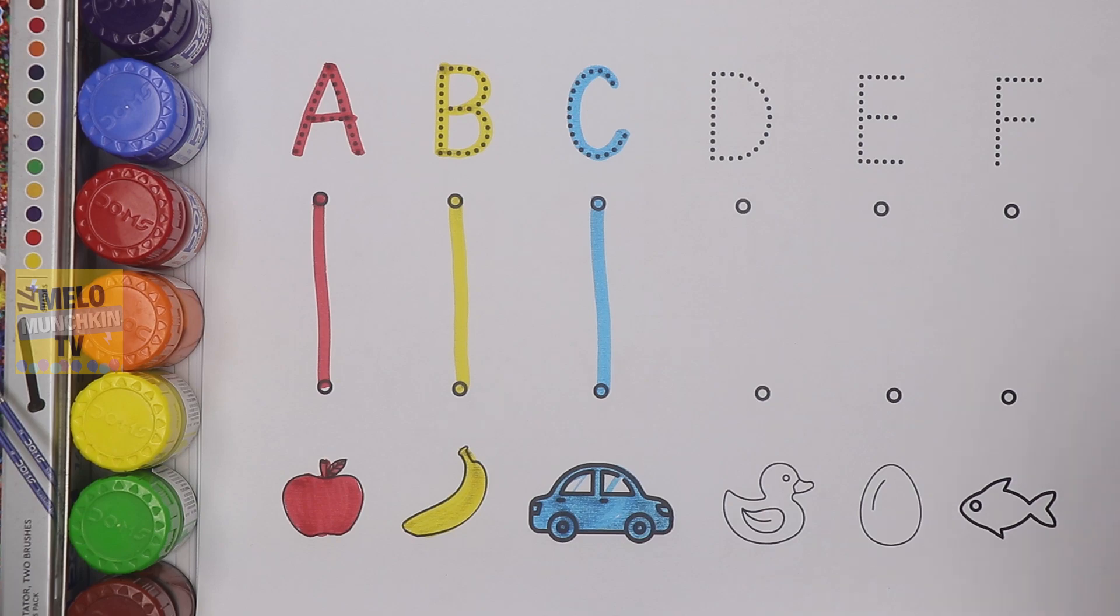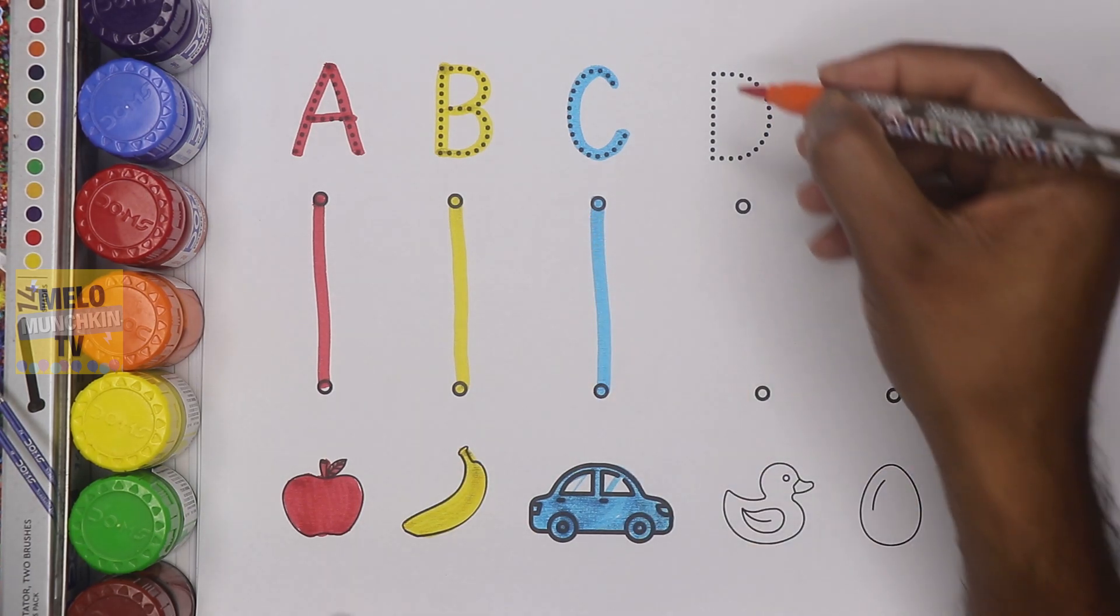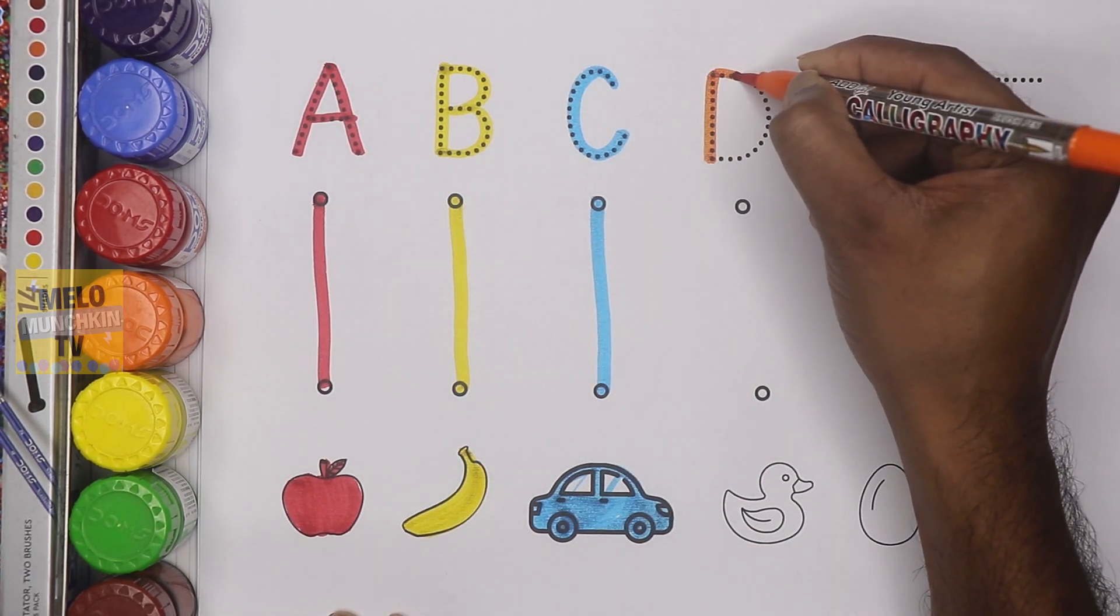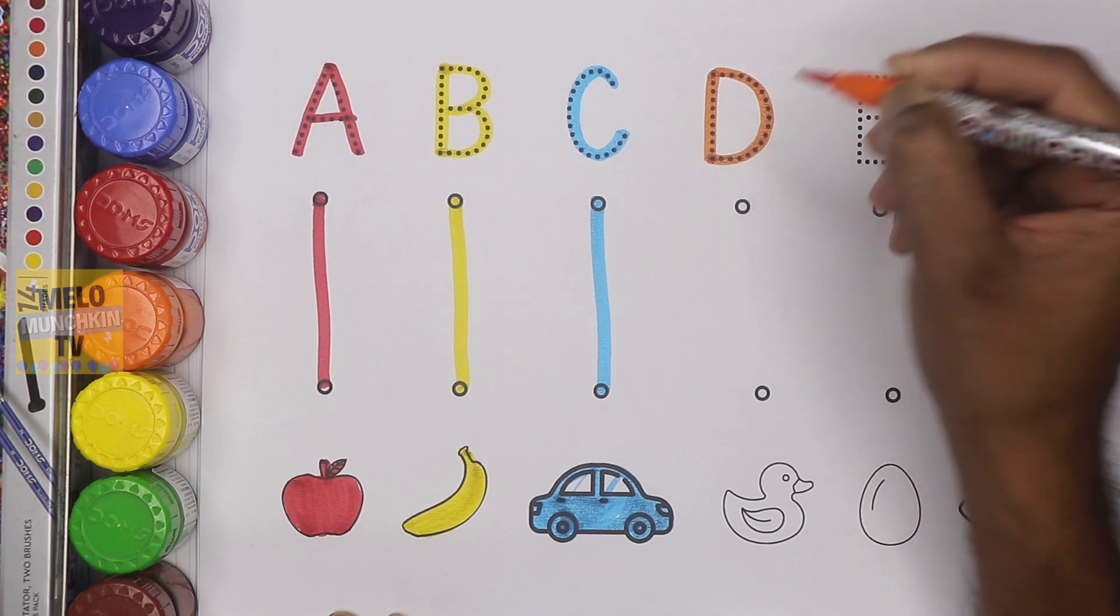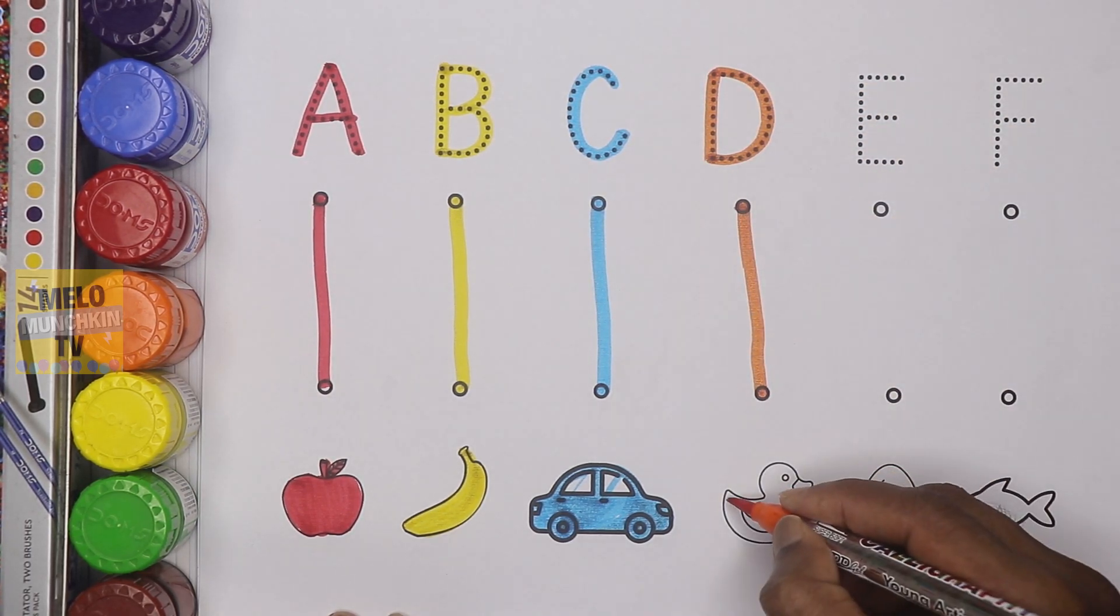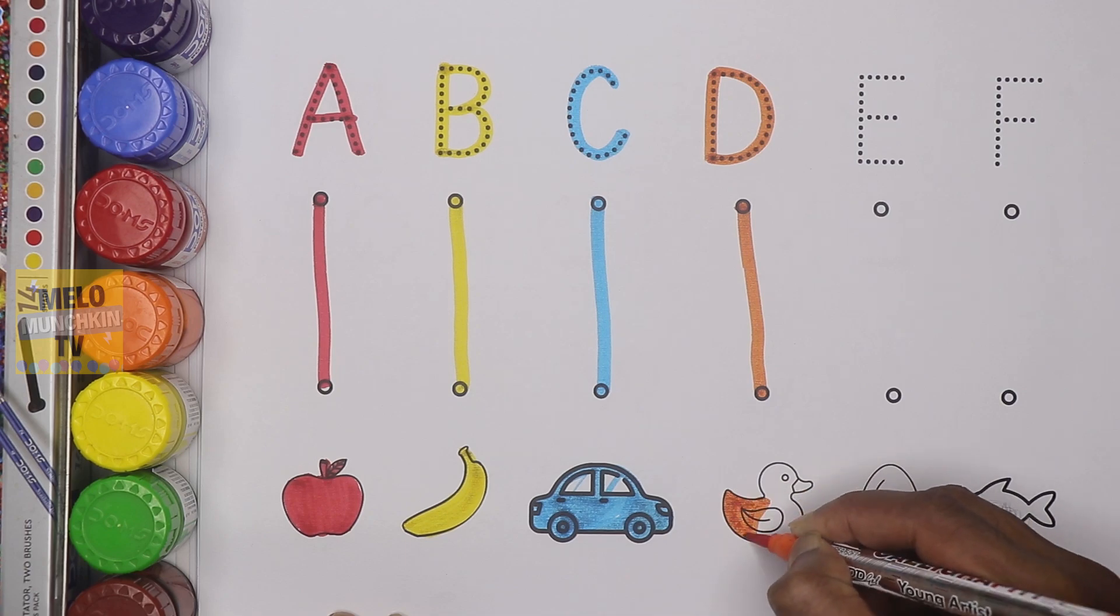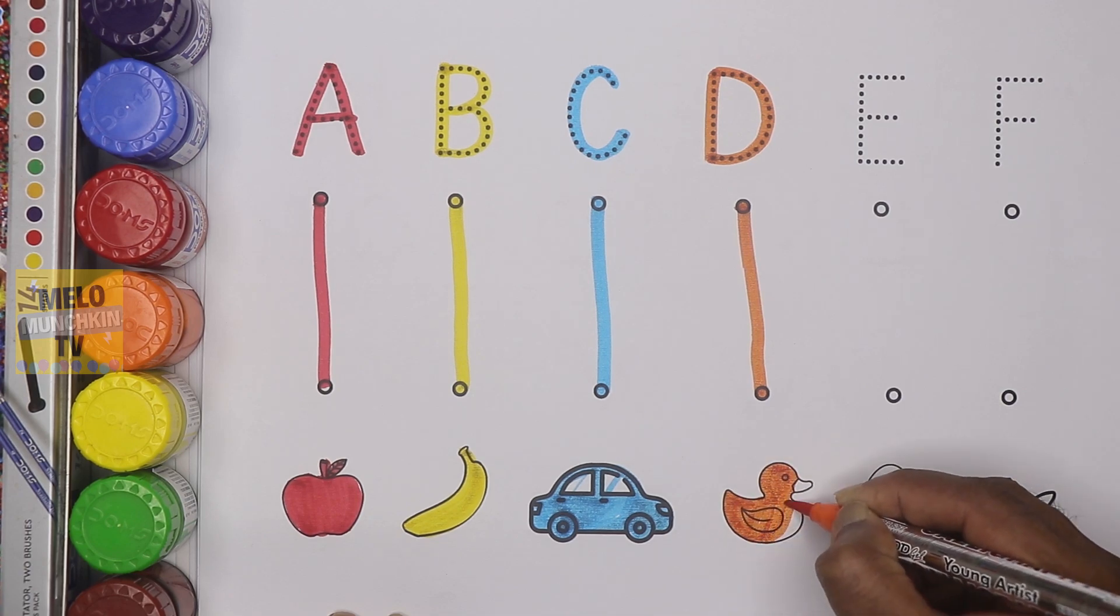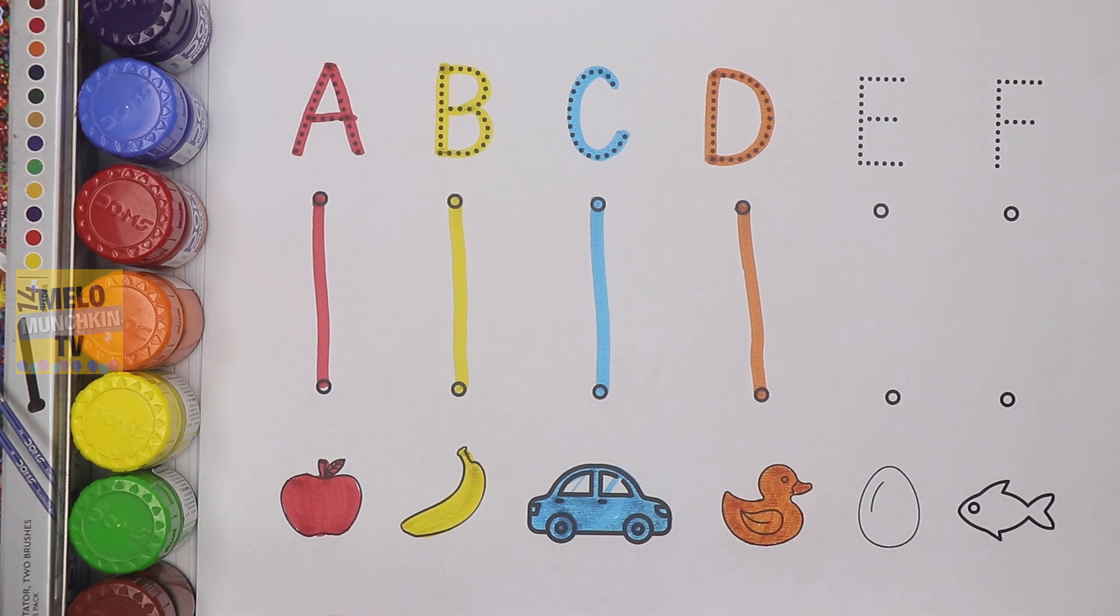Next I'll take orange color. This is orange color to write the letter D. This is letter D. D for duck. Let's color the duck. D for duck.